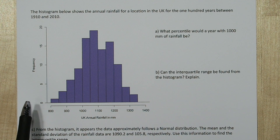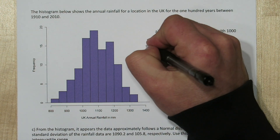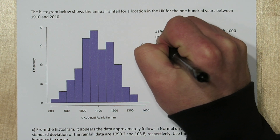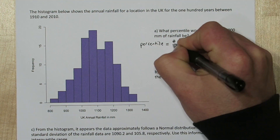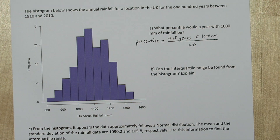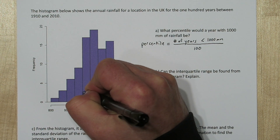So if we look at this histogram, we have the frequencies right here and the amount of rainfall down here for a year in millimeters. What we need to calculate is how many of these hundred years had less than a thousand millimeters of rainfall, and divide that by the total number of years in our data set — a hundred. So here's one thousand.